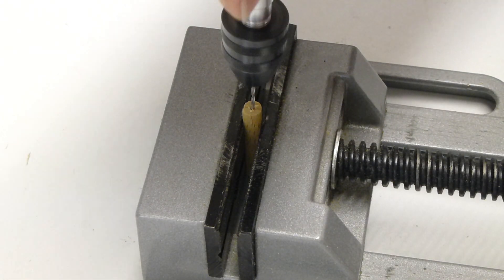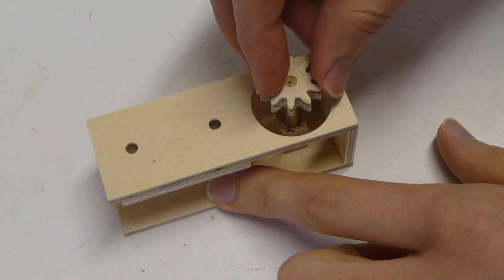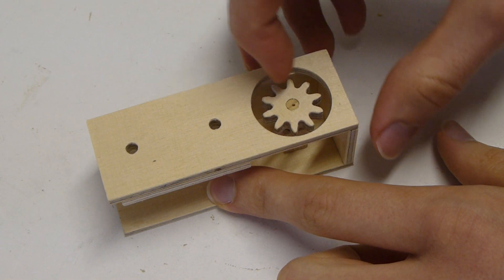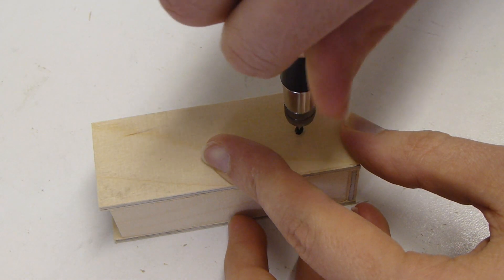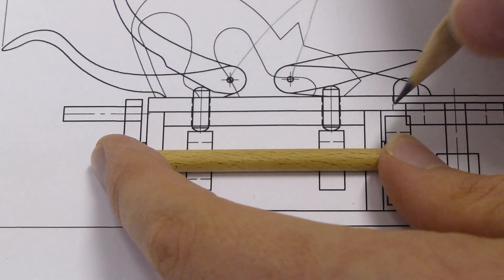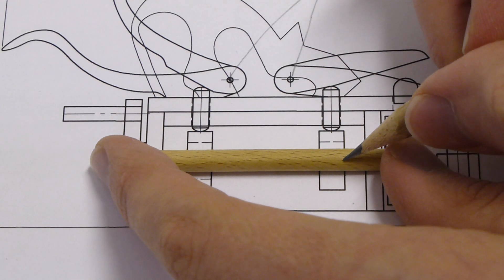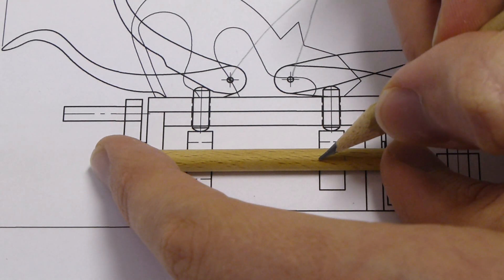Wenn es nicht klappt, hat man ja noch die andere Seite. Die Position der Kurvenscheiben auf der Kurbelwelle kann wieder von der Zeichnung abgezeichnet werden.